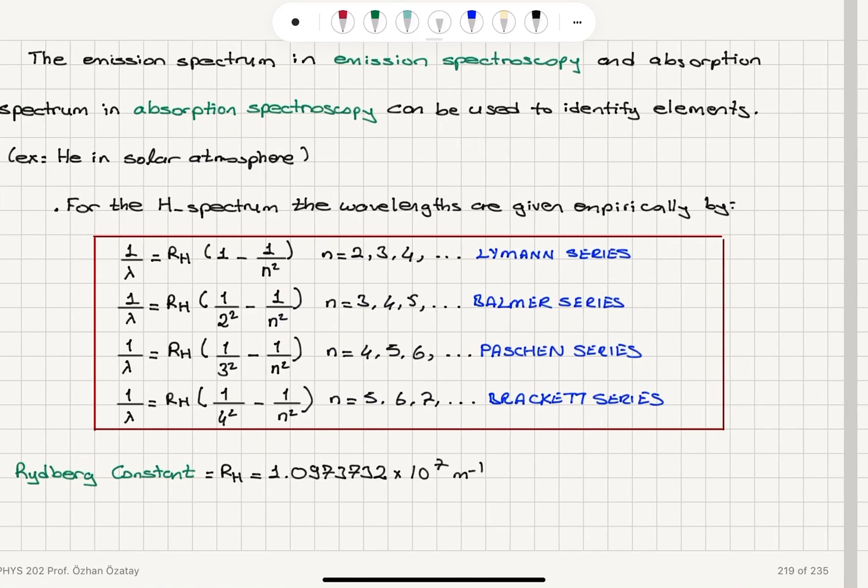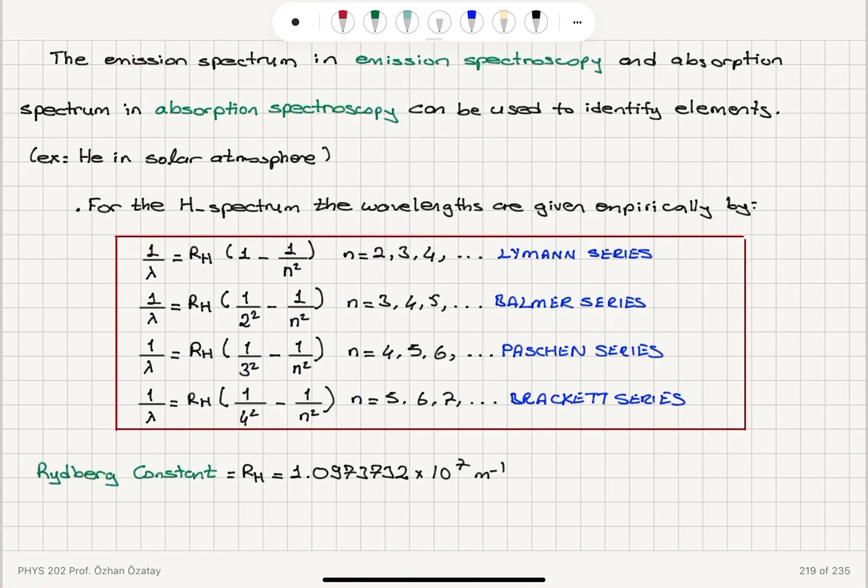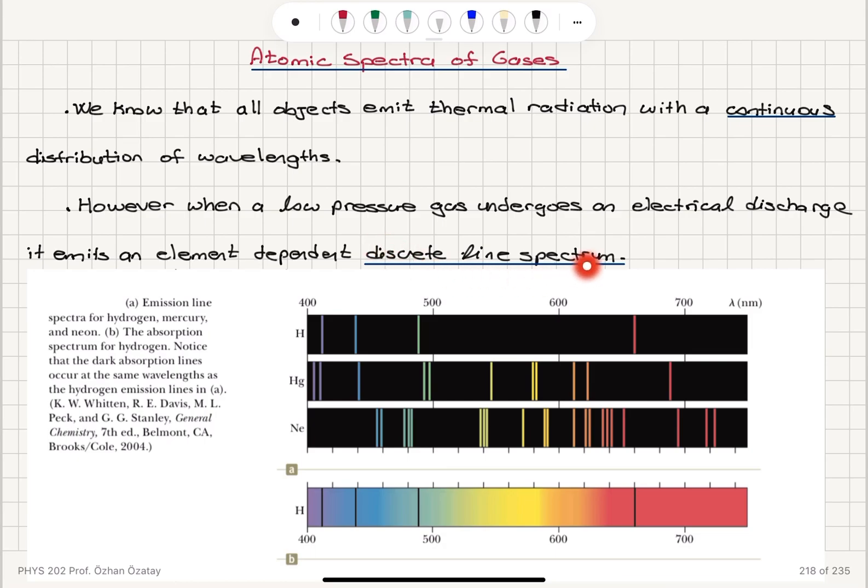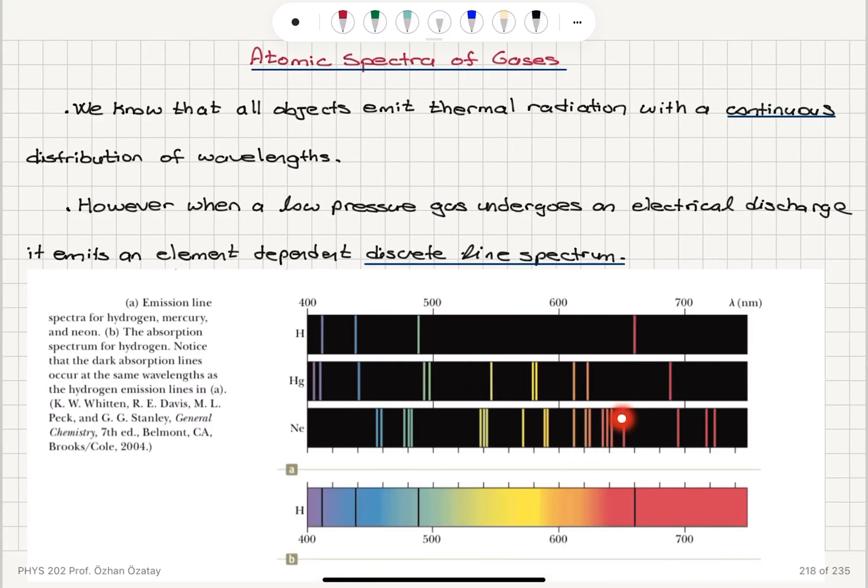That basically summarizes everything going on here. In summary, we talked about discrete line spectra for the emission or absorption spectrum of atoms that allows us to identify the atoms because they have a signature.